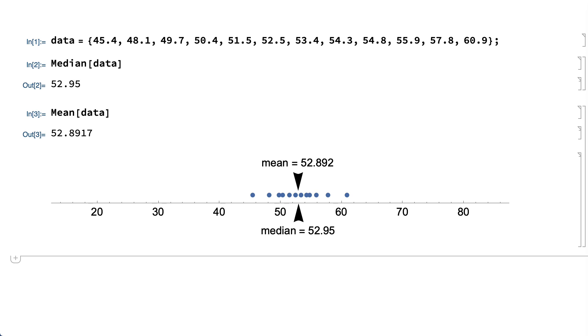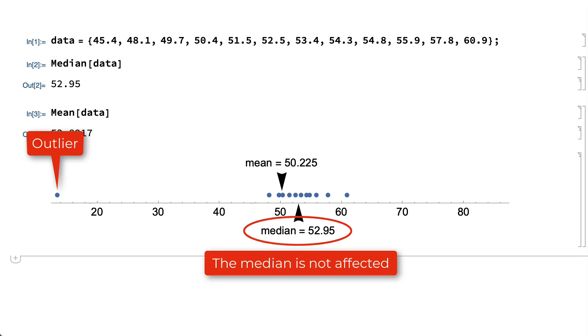The mean is also affected by points called outliers. Outliers are points that fall unusually far from the rest of the data. The median is typically not affected by outliers.